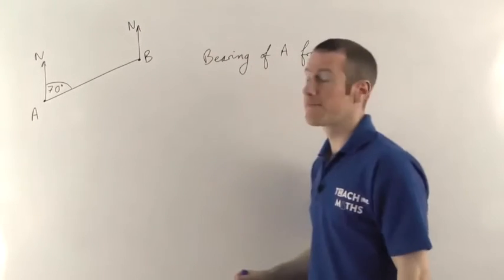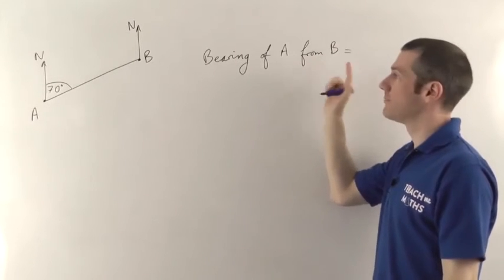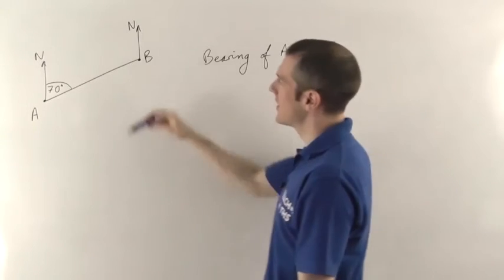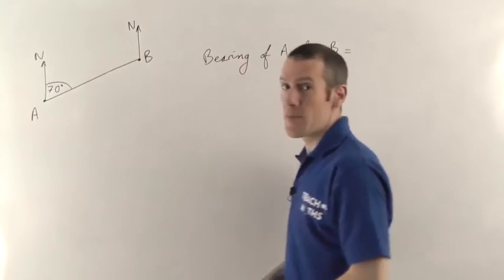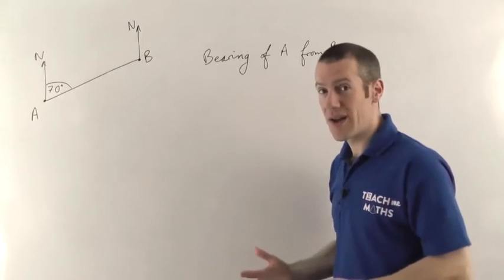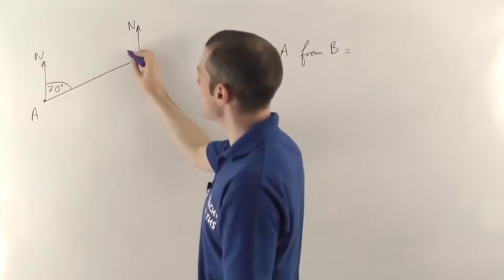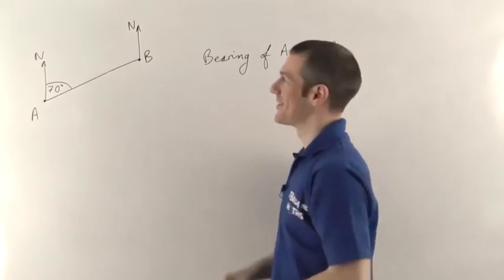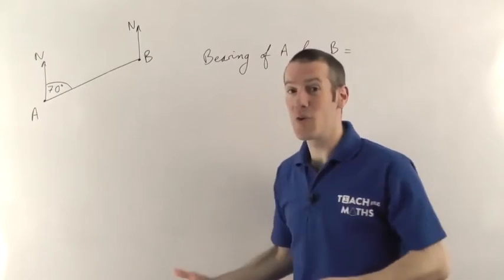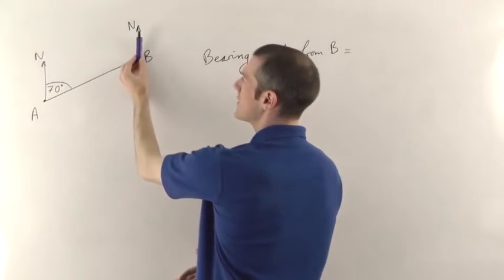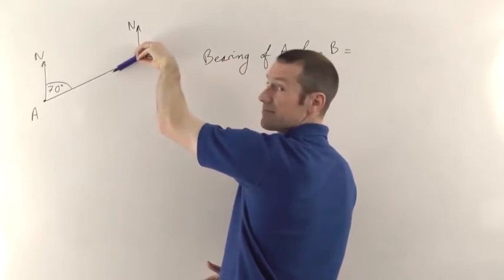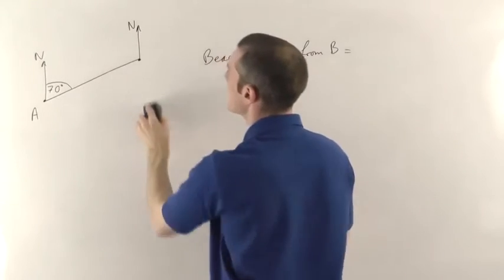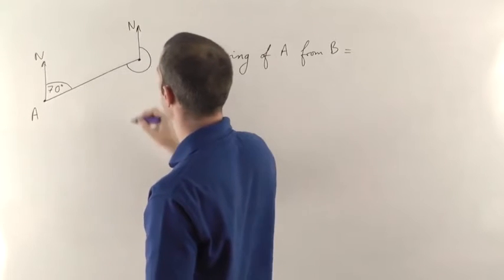You always have to have a north line where you're going from. It's the bearing of A, meaning we're going towards A — that's the direction we're heading from B. But it must be the angle measured clockwise from north, so it's not this angle here, which would be measured anti-clockwise. We need to go clockwise, so we've got to go the long way around, all the way around to there — that's the angle we need.